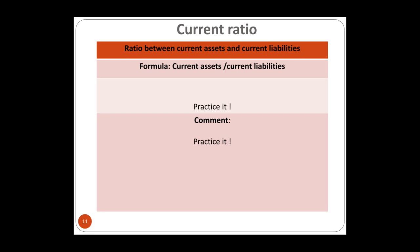If the current ratio is more than 2, it is also not ideal, because the business is holding too much money it could use for other purposes. Current assets include cash, trade receivables, and inventories. If current assets are far higher than current liabilities, the business may have excess cash, too much inventory, or customers not paying on time. That's why 1.5 to 2 is considered acceptable.